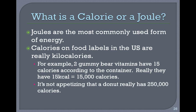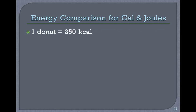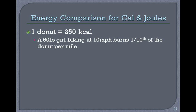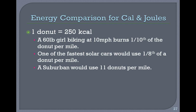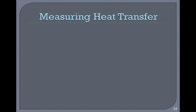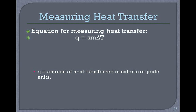For example, two gummy bear vitamins have 15 calories according to the container, but they really have 15 kilocalories, which is 15,000 calories. It's not appetizing that a donut really has 250,000 calories — that's 250 kilocalories. A 60-pound girl biking at 10 miles per hour burns one-tenth of a donut per mile. One of the fastest solar cars would use one-eighth of a donut per mile, while a Suburban would use 11 donuts per mile.